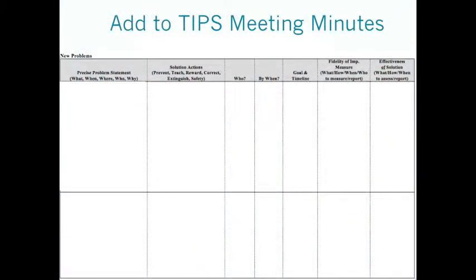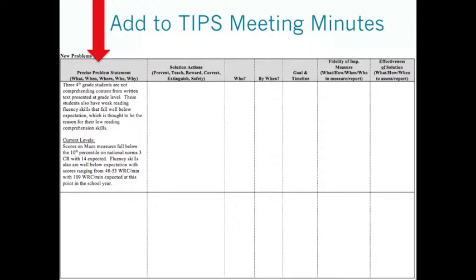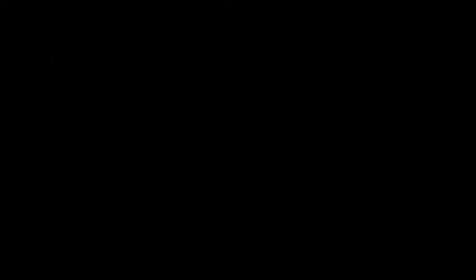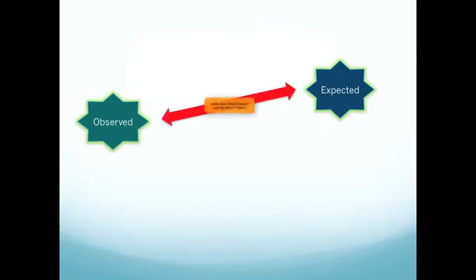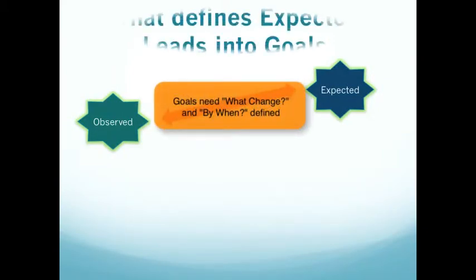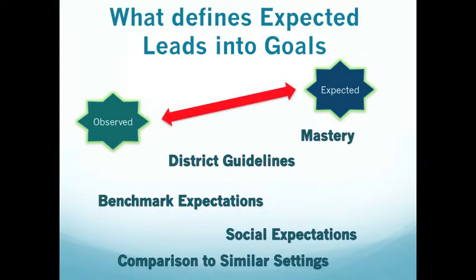The next step is: once we have our precision statement, we want to take our TIPS meeting minutes form and enter it under our new problem sections. Once we've identified the problem with precision, we're going to identify the goal for change — in other words, when will this no longer be a problem? Our expectations will be similar to what we initially held. We can use district guidelines, national norms, or benchmarks that our district has already put in place.